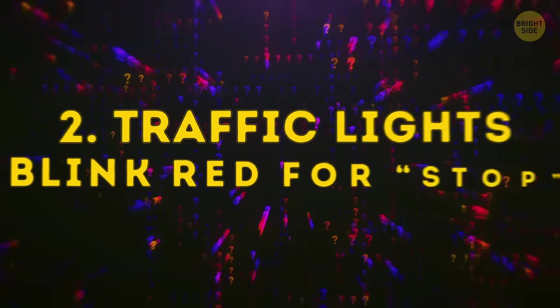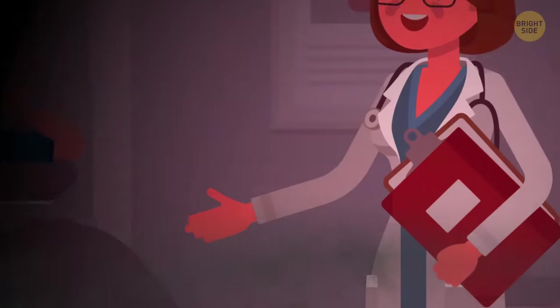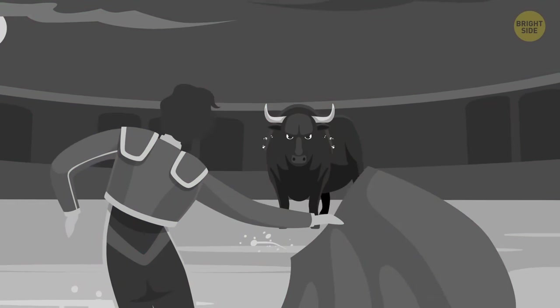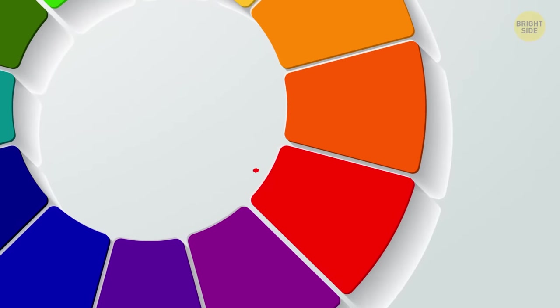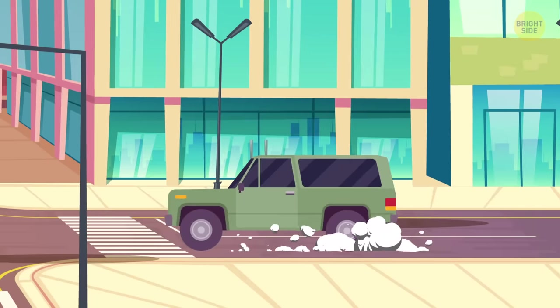Traffic lights blink red for stop because red is associated with alarm. Like when a bull sees red. Except they don't. Bulls are colorblind. But anyway, red is also the opposite of green on the color wheel, and stop is the opposite of go.